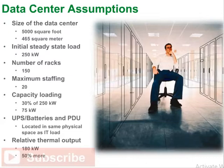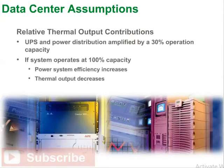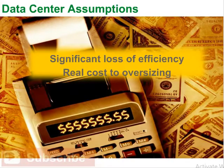For this example, it is assumed that UPS batteries and PDUs are located in the same physical space as the IT load. The thermal load is 180 kilowatts, which is 50% more than the IT load. Note that contributions to thermal output from the UPS and power distribution are amplified because the system is operating at only 30% of capacity. If the system were operating at 100% capacity, power system efficiency would increase and their relative thermal contribution would decrease.